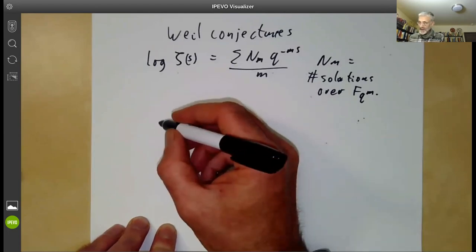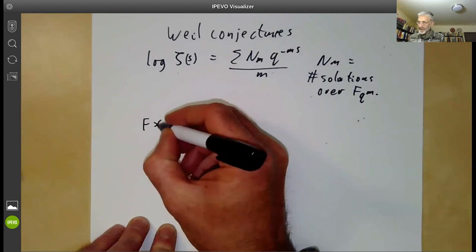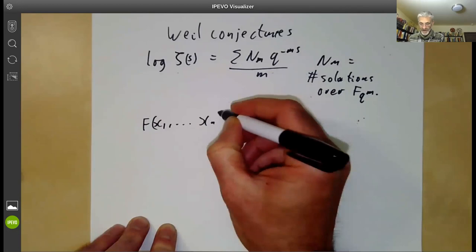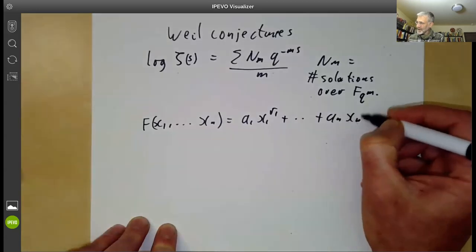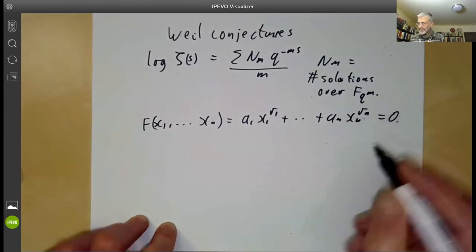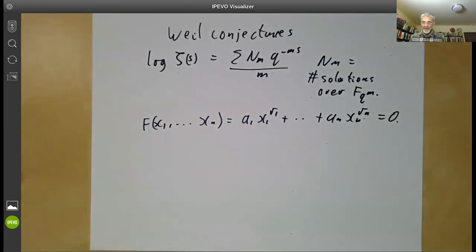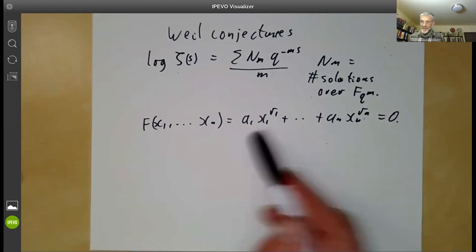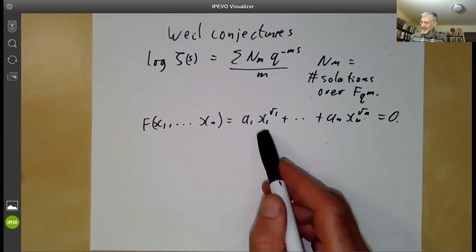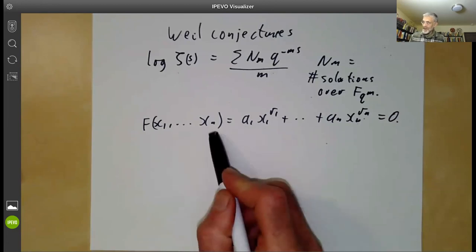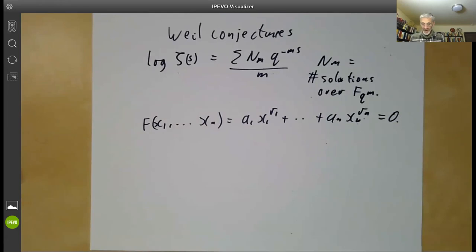Weil calculated the zeta function explicitly for a Fermat hypersurface — a hypersurface defined by the equation a_1 x_1^{r_1} + ⋯ + a_n x_n^{r_n} = 0. These Fermat hypersurfaces are almost the simplest non-trivial examples of higher-dimensional varieties, and they are about the simplest examples of non-rational high-dimensional varieties, making them a traditional test case.